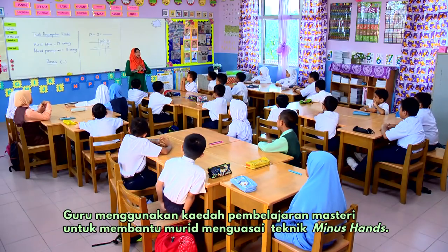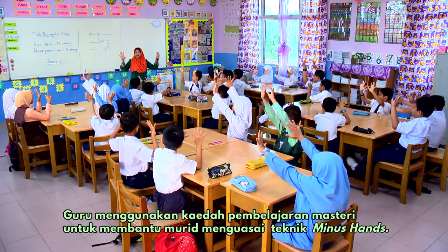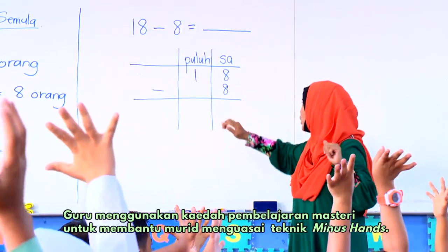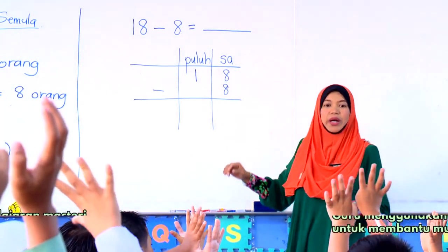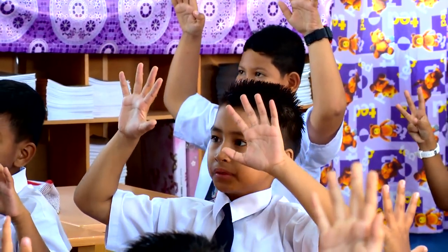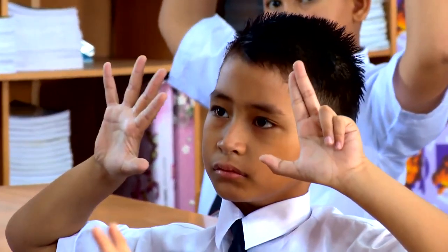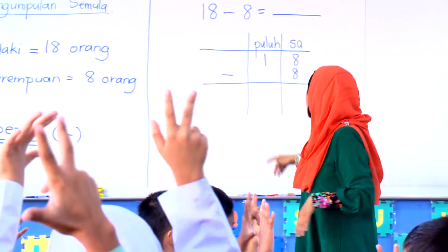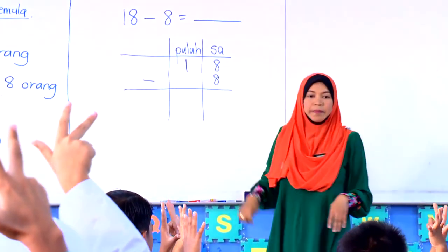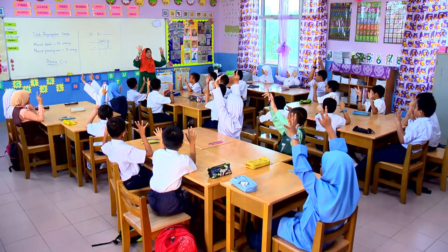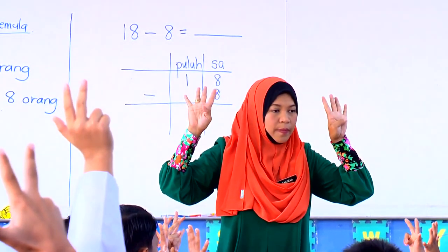Boleh tunjuk saya 10 jari awak. Sekarang, kita nak tengok nilai ini sama. Bila sama, awak kena keluarkan berapa dekat sini? 8. Tunjuk jari pada saya sebanyak 8. Sekarang 8 kita nak tolak dengan berapa? 8. 8 nak tolak 8 — maka jari kita akan tutup atau akan buka? Tutup.